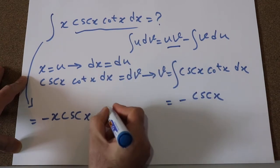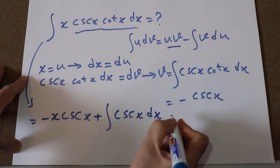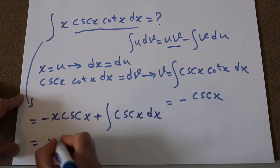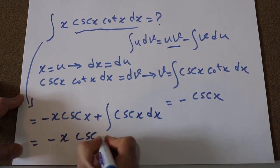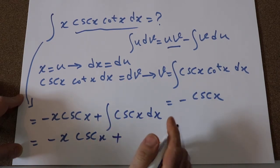So minus times minus is plus, plus the integral of cosecant x dx, which will be equal to minus x cosecant x plus the integral of cosecant x dx. From the table of integrals,